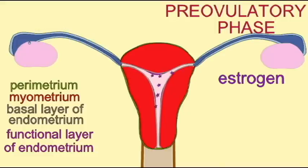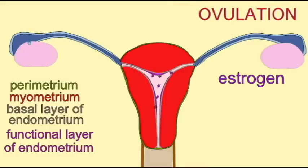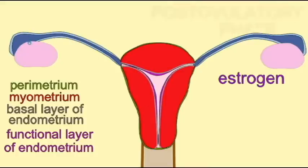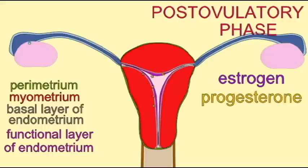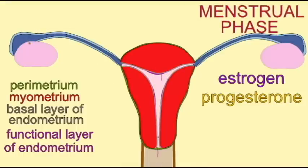If conception does not occur, the progesterone and estrogen coming from the ovary ceases. This causes blood vessels at the base of the functional layer to constrict, and this tissue is then shed through the cervix and vagina as the menstrual flow of the following month.